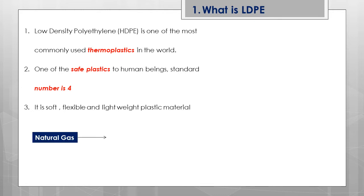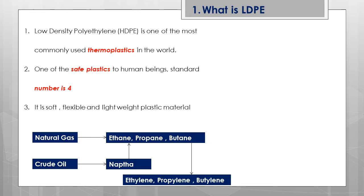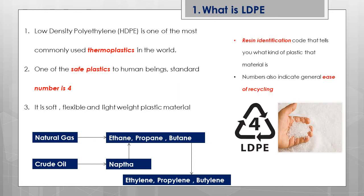Regarding raw material manufacturing, crude oil leads to the production of naphtha, which is a byproduct of crude oil. Naphtha further produces ethane, propane, and butane. Similarly, natural gas also produces ethane, propane, and butane. The ethane then goes through a polymerization process to produce ethylene, which is the basic raw material route for LDPE.